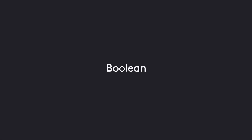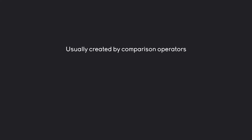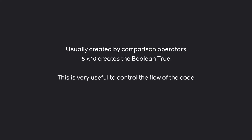The next incredibly important data type is a boolean. All a boolean is is either true or false. Usually we are creating booleans with comparison operators. For example, if we are running something like 5 is smaller than 10, we are getting the boolean value true. And this is incredibly useful to control the flow of our code — something we are going to talk about a lot in the next section. For example, if a condition is true, then you want to do something.